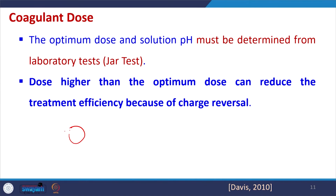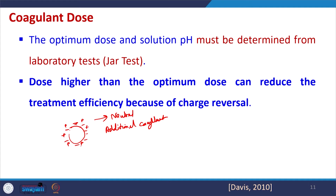We know that colloids have some negative charge. What we do is add coagulants from outside — positive charge comes near the surface of the colloids and they become overall neutral. If we add additional coagulants beyond the optimal dose, extra positive charge will be there and charge reversal will happen — the colloids will become positively charged. Earlier the colloid was negatively charged, we converted it to neutral, and because of the addition of more coagulants it has become positively charged.